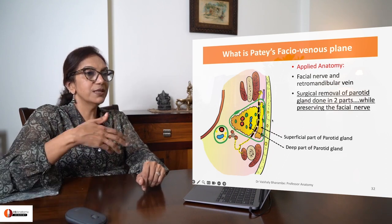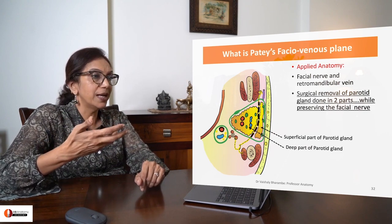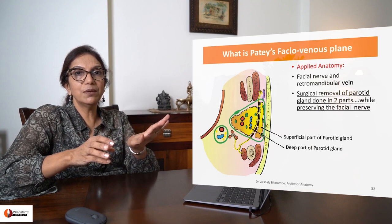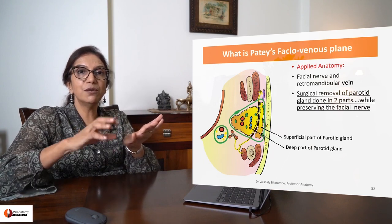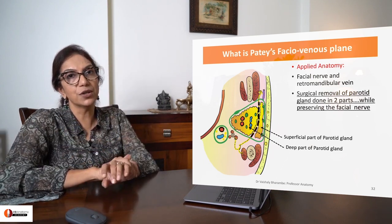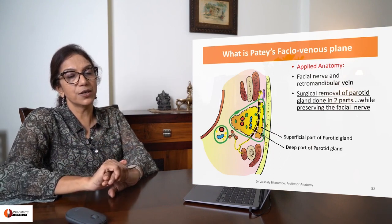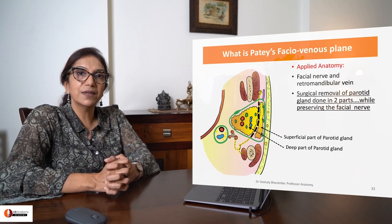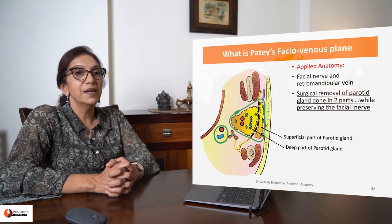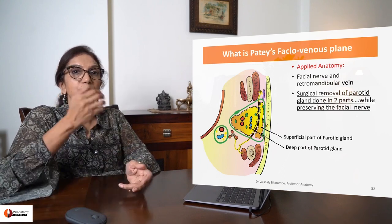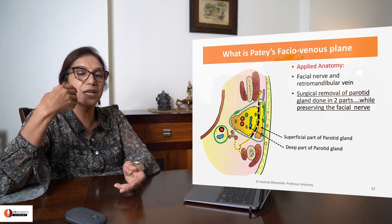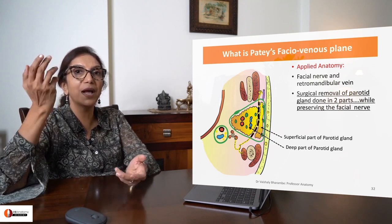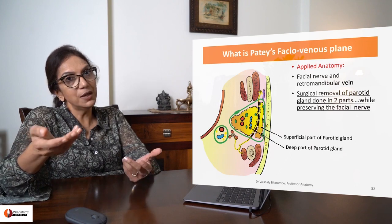When you are doing surgical removal of the parotid gland, it must be done in two parts — one part deep to the facial nerve and one part superficial to the facial nerve, preserving your facial nerve. Why do you want to preserve your facial nerve? Obviously, because if it got cut during drainage or any manipulation of the parotid gland, the patient would come to you with facial paralysis.